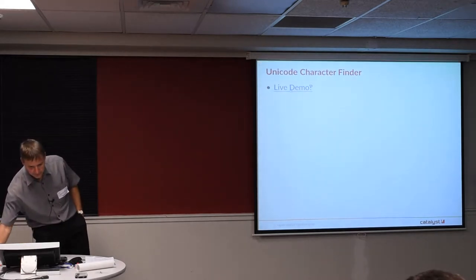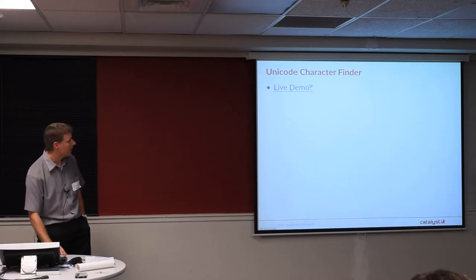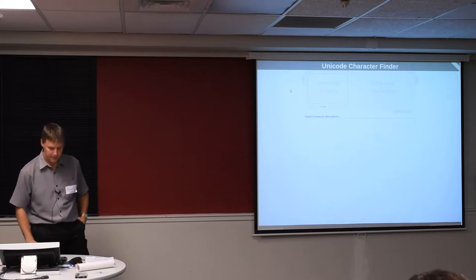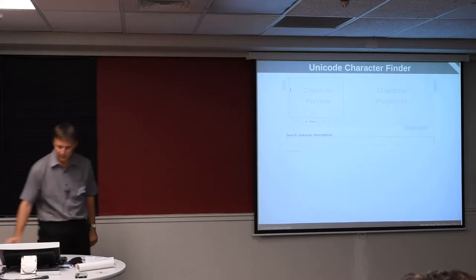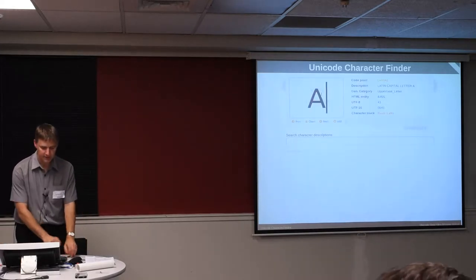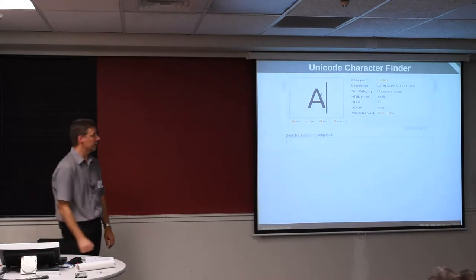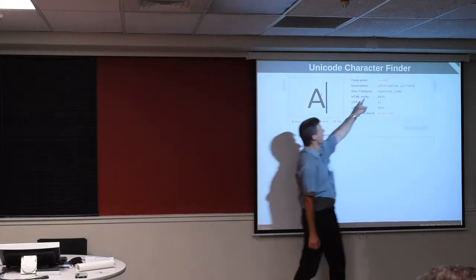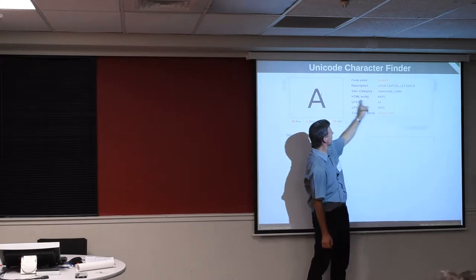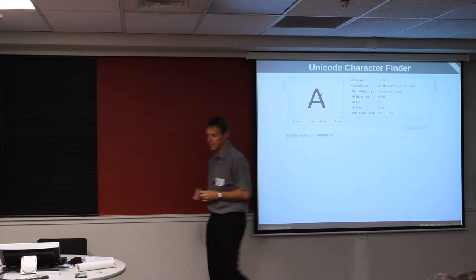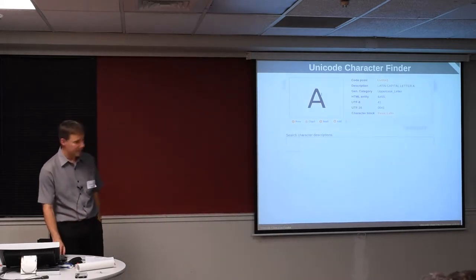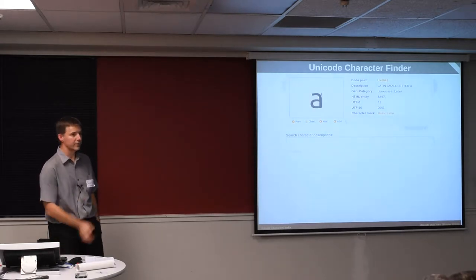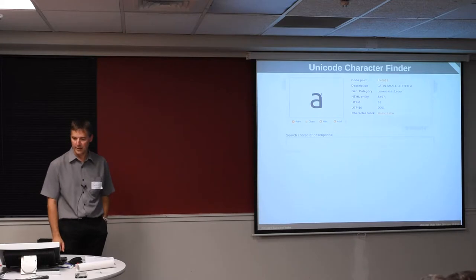If I click on that — that's what it looks like — and I probably can make this a bit bigger. If I come over here, click here, and type the character, you can see character number 41 in hex, 65 in decimal, in the HTML numeric character entity format. If I type in another letter, then it throws away the first one, so it's only ever giving me details of one letter at a time.